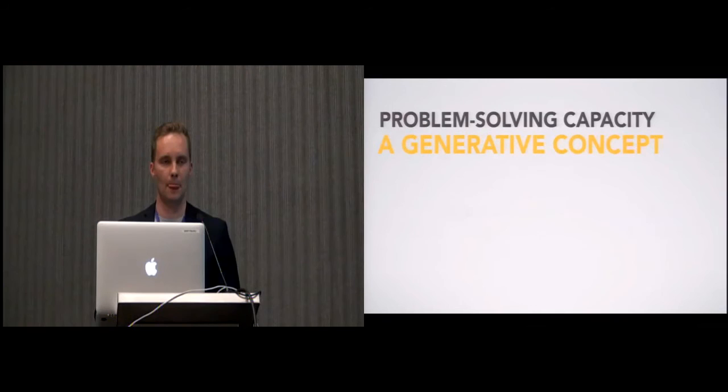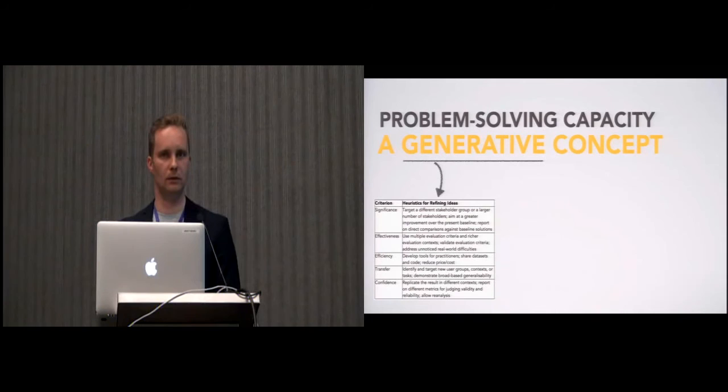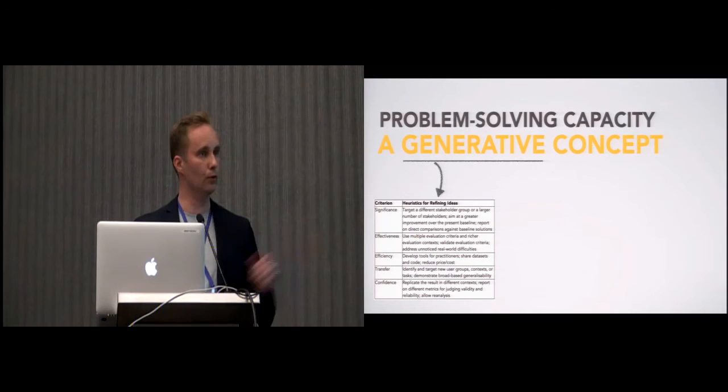But we are not limited to just describing how things are. This can be used in a reverse manner, if you will, to generate ideas and refine ideas. So, you can take the five criteria, and you can generate heuristics or ideas on how you can improve your own work. And we offer a table in the paper that you can use as a starting point.